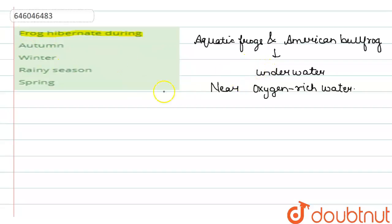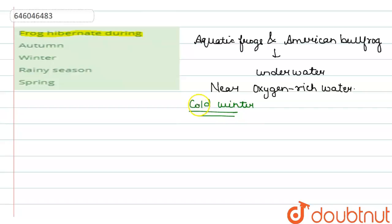The season in which frogs go into hibernation is the cold season, that is winter. Hibernation in winter is a very common response for frogs. They spend a lot of the winter lying on top of the mud.